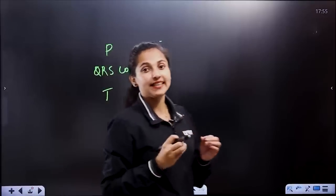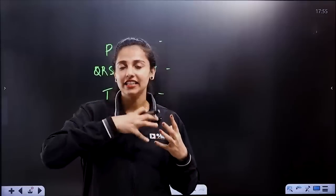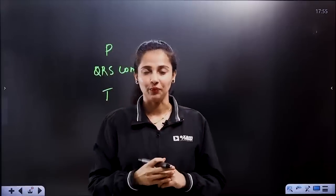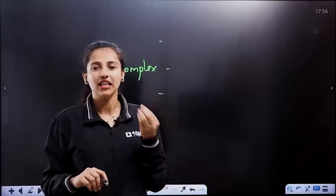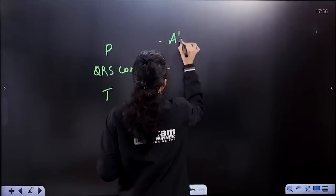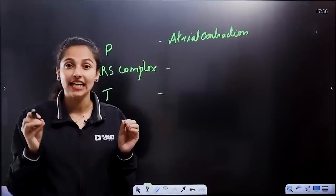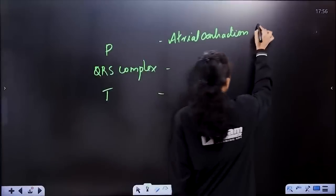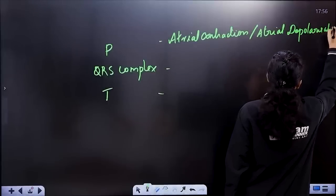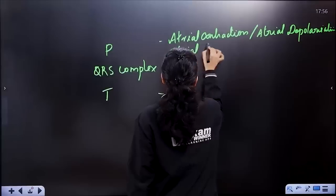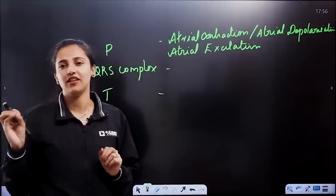Now, what do we call the heart's electrical activity? When an electrical signal is produced, we get atrial contraction. That means the P wave represents atrial excitation — atrial depolarization. Depolarization means atrial contraction. That is the P wave.